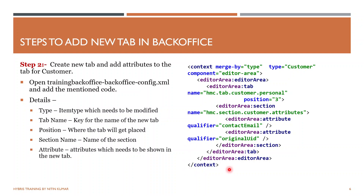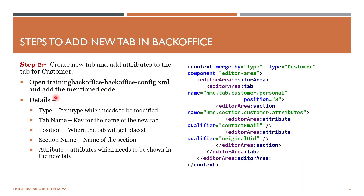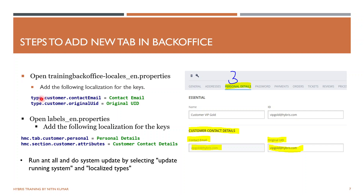I believe the code part is clear. If you have any doubts, comment below. The next step is giving names to the new tab. Go to the locales_en.properties file of the training back office. This file holds the localized names for your keys. For the attributes I added — contactEmail and originalUid — I write 'type.Customer.contactEmail=Contact Email' and 'type.Customer.originalUid=Original UID' as the display names.